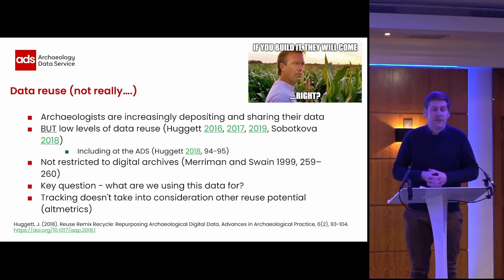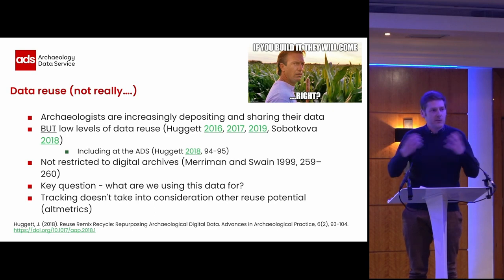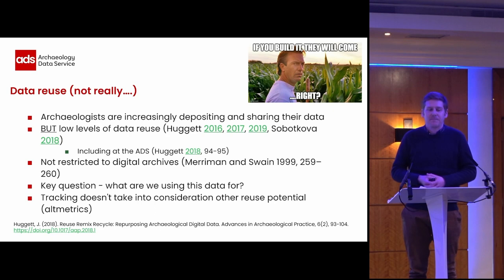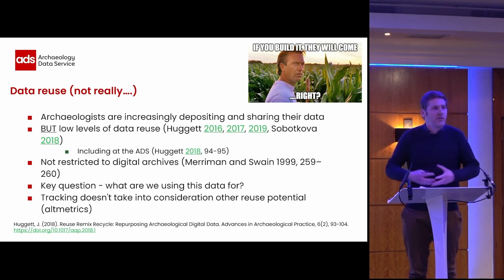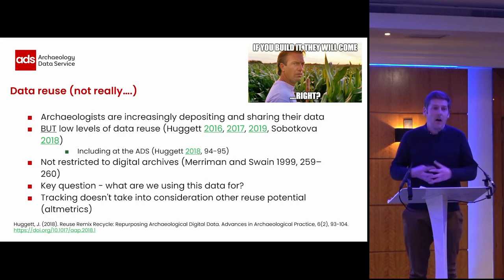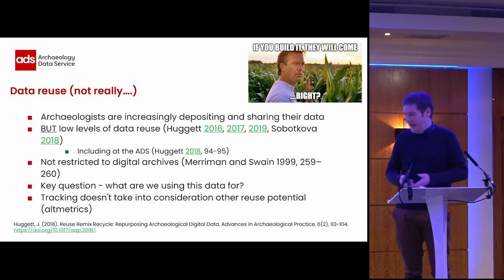We use digital object identifiers — DOIs — so that people can reference our archives in their own publications, but that is inconsistently picked up, which makes it harder to track. We're also not tracking alternative metrics. It's all just through academic publications, not the extra things like Wikipedia or blogs, all of which could be reusing archives as well. We're just not picking up that data as readily as we would have liked.